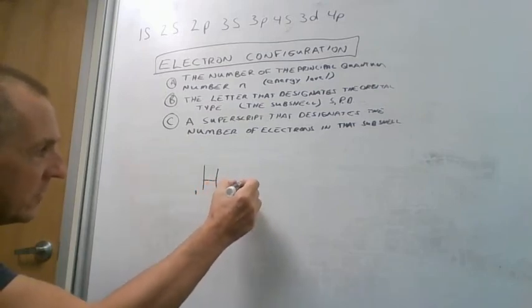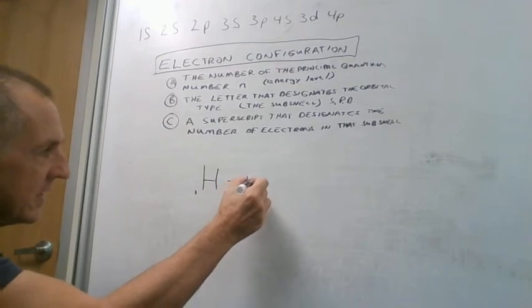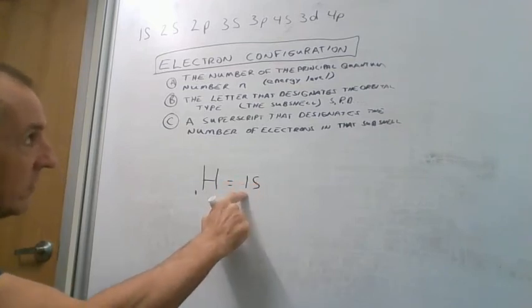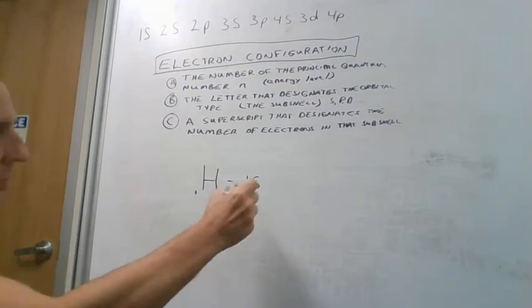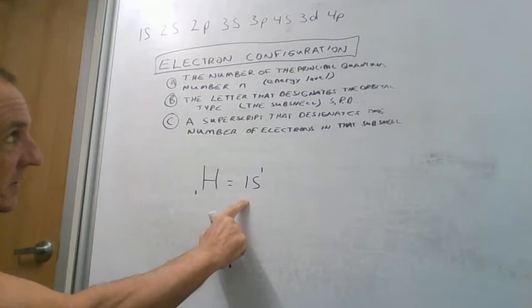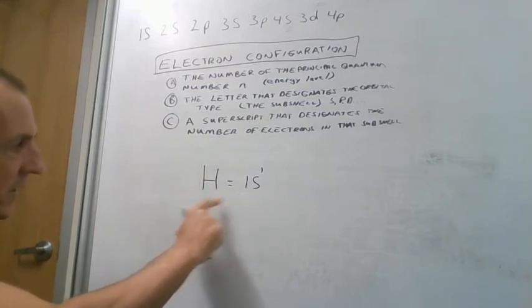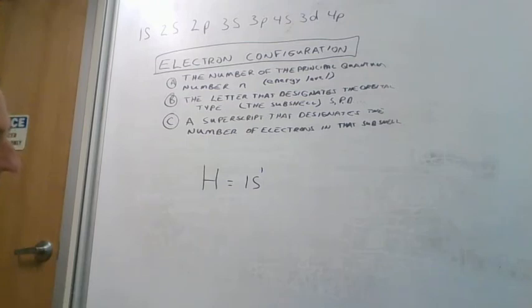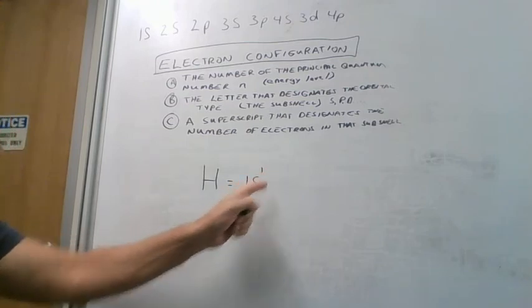So if we want to write the electronic configuration for hydrogen, we say an electron is at energy level one in an s subshell, and it has one electron. So we write a number for the energy level, we draw the letter for the shape of that energy level, and then we put the number of electrons.